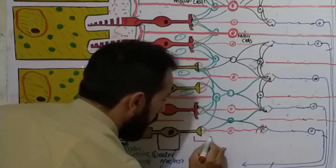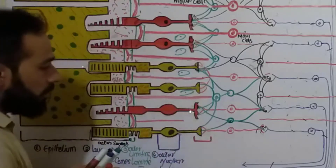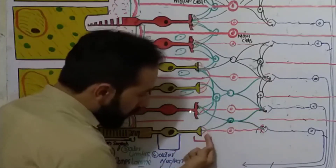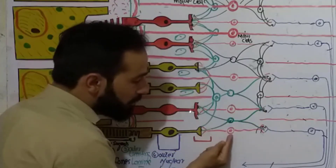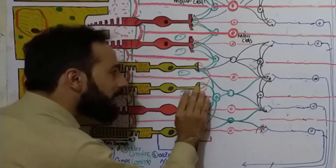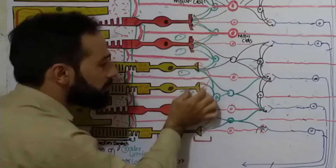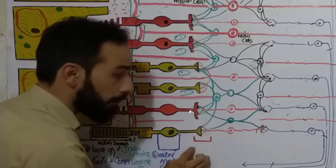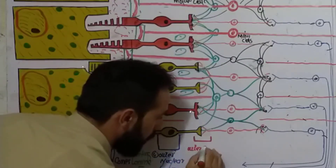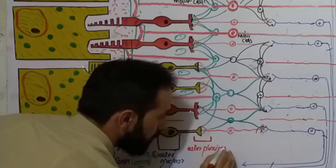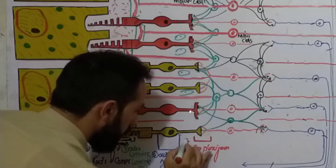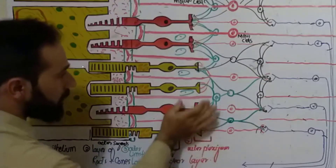Here is our fifth layer. These are the end parts of the rods and cones, then the sensory parts of the bipolar cells connecting together, along with horizontal cells and interplexiform cells. They make here a network. In the previous lecture, this network was called the outer plexiform layer. So this is our fifth layer: the outer plexiform layer.